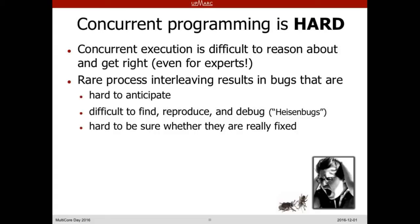There are rare process interleavings that result in bugs that are hard to anticipate. They are difficult to find. They are difficult to reproduce, even if you know you have a bug. If you try to debug them, they might disappear — they are so-called heisenbugs for that reason. If you try to look at them, they just aren't there anymore. Even if you fix some of these bugs, it's hard to know that you've really fixed them. This is a big productivity problem — programmers spend a lot of time debugging, and it can have severe consequences.